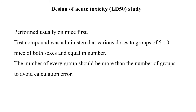LD50 is normally determined using mice because they are the smallest animals and their maintenance is cheap and convenient. The test compound is administered at various doses to groups of 5 to 10 mice of both sexes in equal numbers. The number of animals per group should be more than the number of groups to avoid calculation errors. For example, if 5 groups are taken, each group should consist of at least 6 to 10 animals.